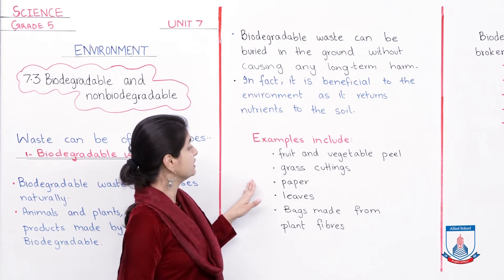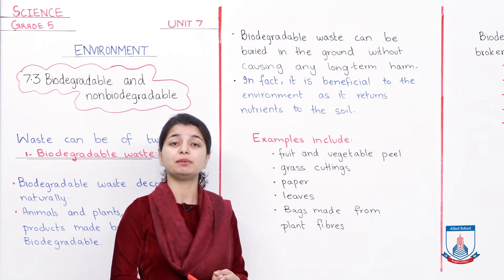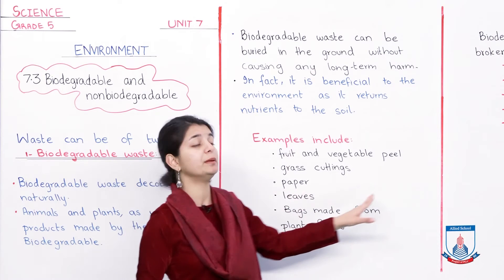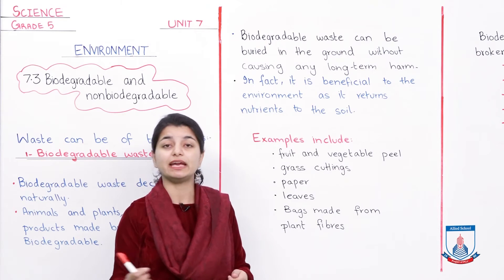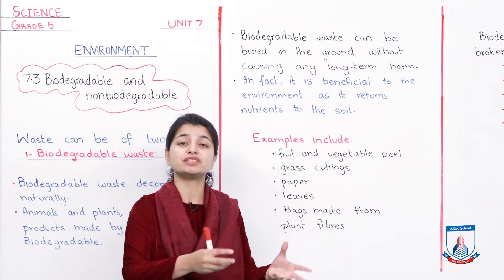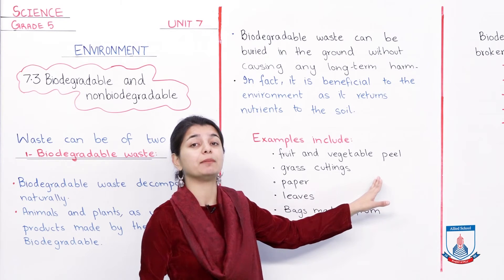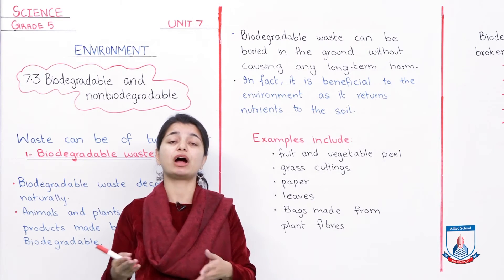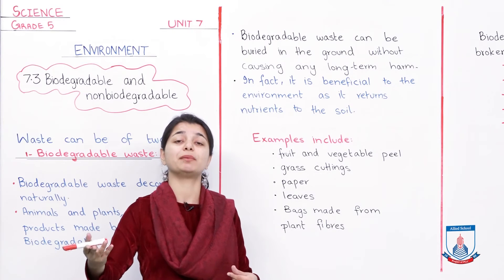Now let's look at specific examples of biodegradable waste. All animals and plants and things made from them are biodegradable. Specific examples include fruit and vegetable peel — what you also call the shell. If it is a peel or shell, it is biodegradable. Wherever you dispose of it, it will decompose. When it reaches the soil, it will give the soil a benefit. All the peels and remains after eating fruit and vegetables are biodegradable waste — put it on the soil and you will see it decompose.